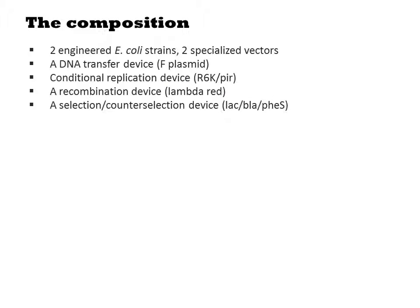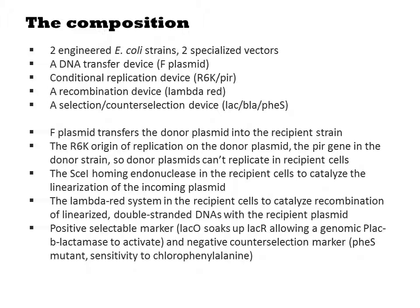To recap, their system is composed of two engineered E. coli strains and two specialized vectors. It also contains a DNA transfer device, a conditional replication system, a recombination device, and various selections. When you mix the two strains, F-plasmid transfers the donor plasmid, but the plasmid is unable to replicate in the recipient host. The homing endonuclease cleaves the DNAs, releasing the fragments, and lambda-red recombines them. Finally, selections allow only the recombined plasmids to survive. Thus, experimentally, you only need to mix the cells and then grow them in some chemicals to functionally transfer the gene cassettes into a new vector context.